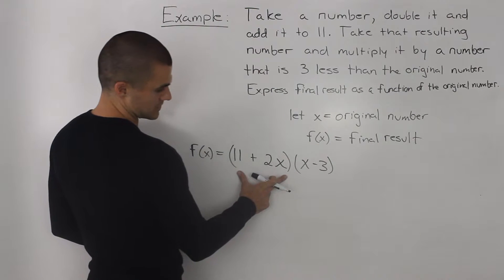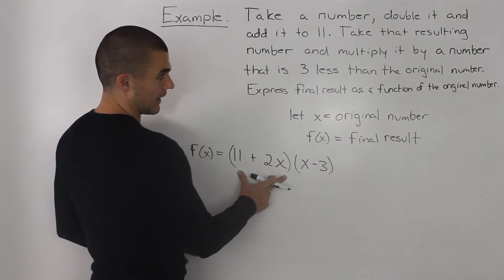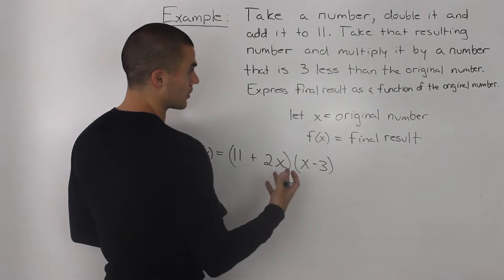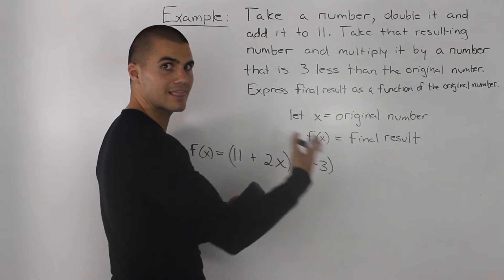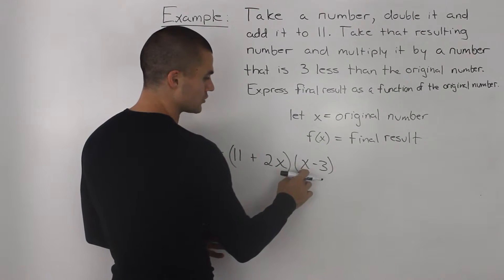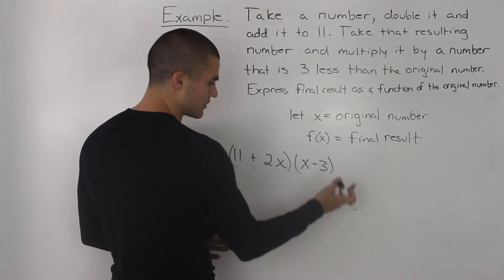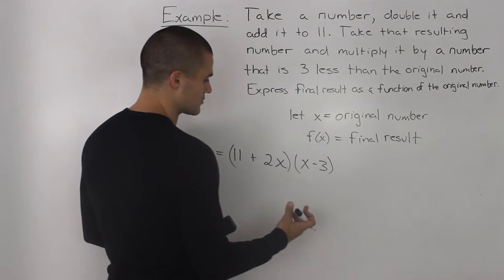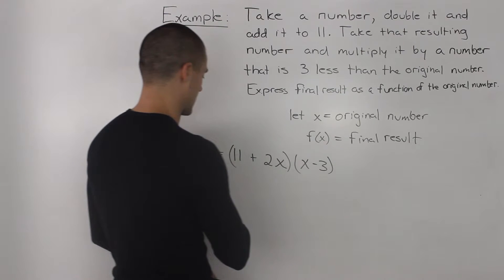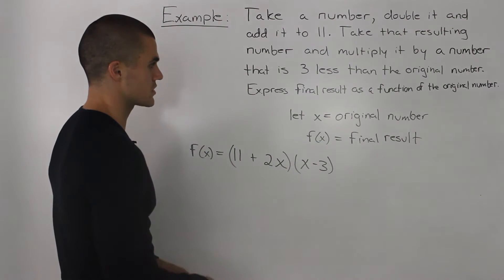And then we take that resulting number, this bracket here, and multiply it by a number that is 3 less than the original number. Our original number is x, and 3 less than that would be x minus 3. And then multiplying both of these numbers, that gives us our final result.